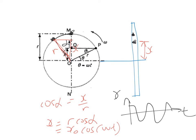This is also logical from common sense. At t = 0 you start from the highest point and then go down. Plotting x versus t — starting at the highest point and moving down — gives a cosine graph, confirming the equation x = x₀ cos(ωt).